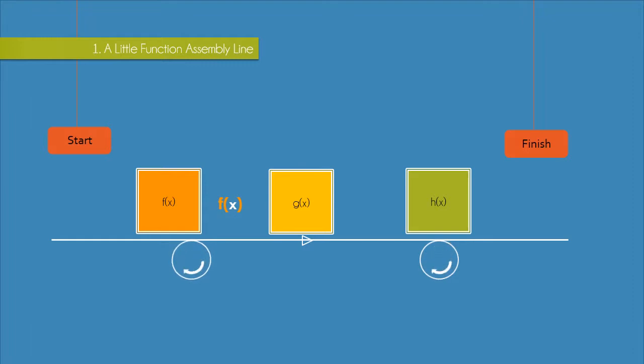Now this output is then passed on to g of x where g of x applies its rule and the output will be g of f of x. Then this output is passed to h of x where h of x applies its rule and our final output is h of g of f of x.